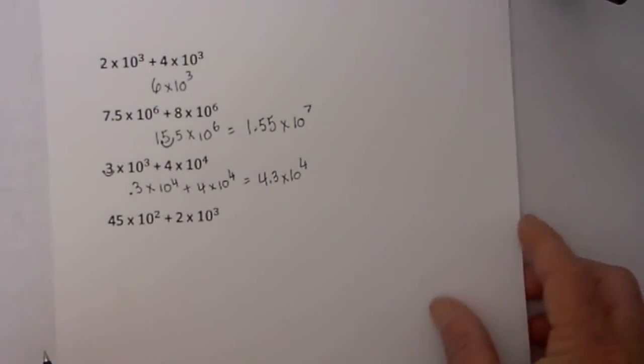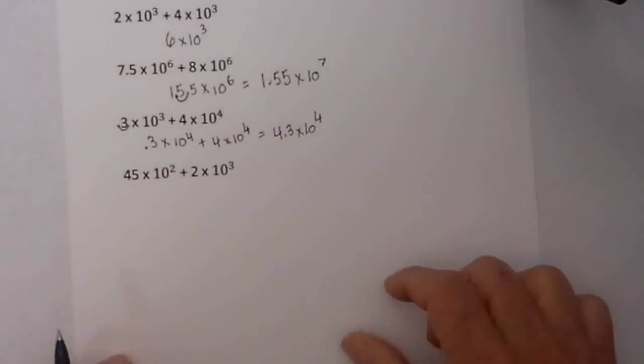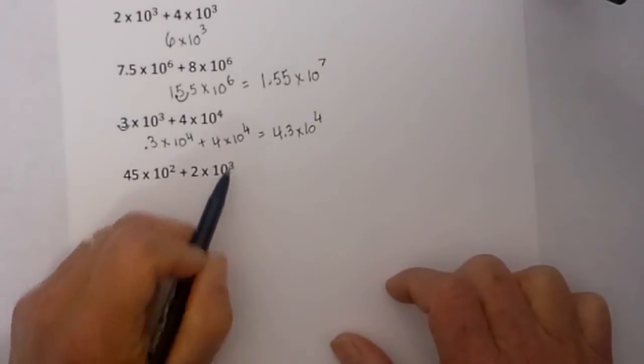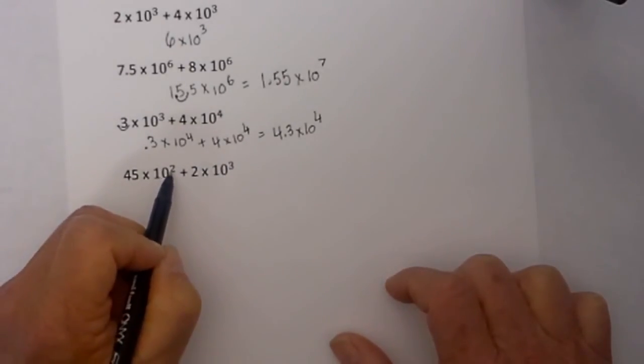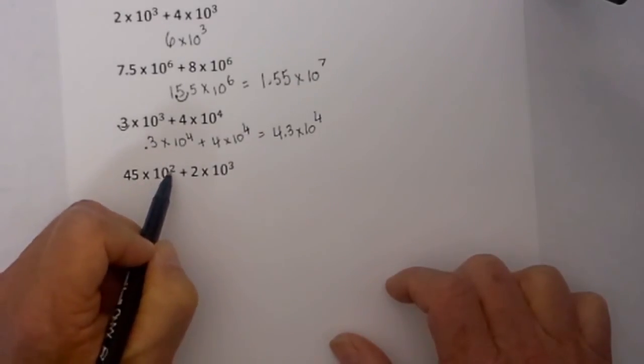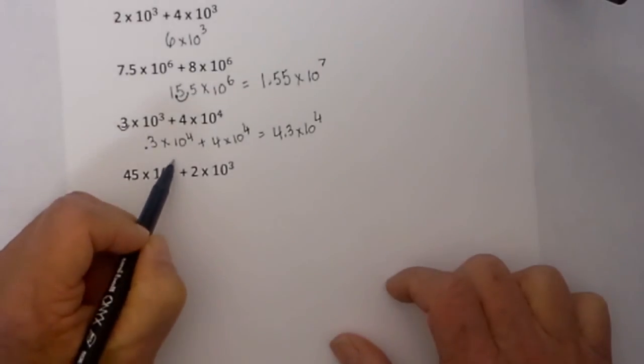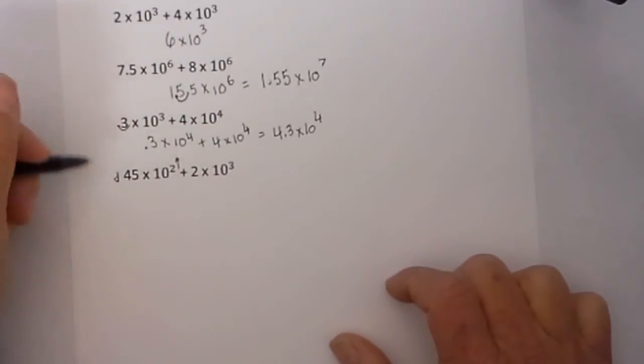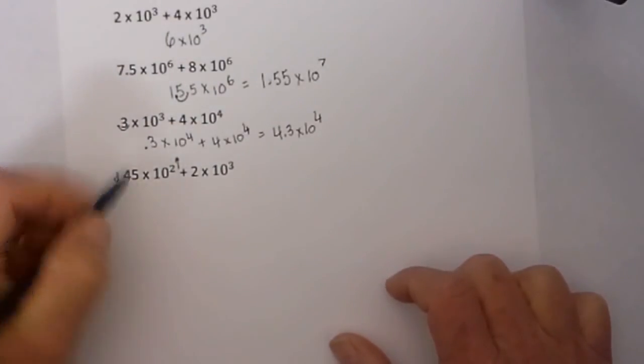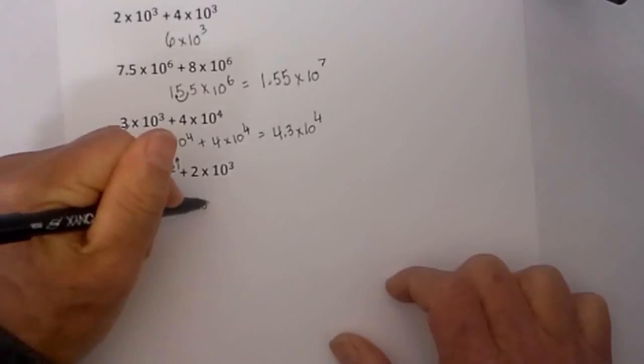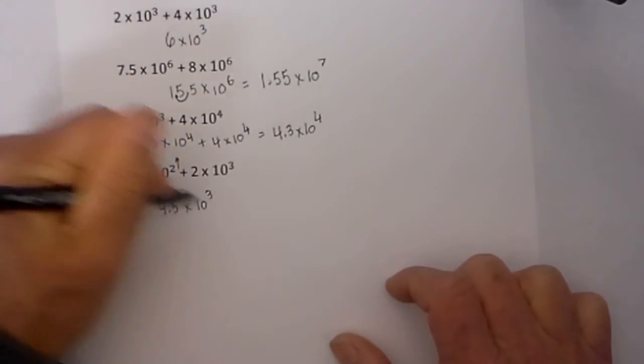And finally our last example is we have 45 times 10 to the second plus 2 times 10 to the third. The two exponents are not the same so I will adjust the 45 and I will adjust the exponent up. So if it needs to increase the number will get smaller so this will be going up and this will be going down and so I will move the decimal place 1 to the left so that will be 4.5. This number is getting smaller so my exponent will increase by that amount.